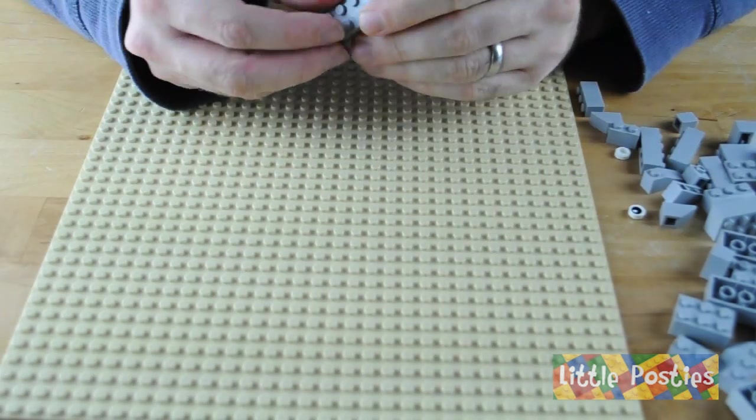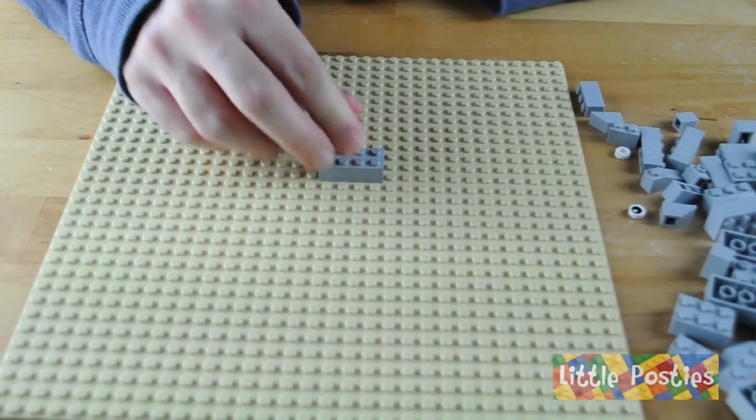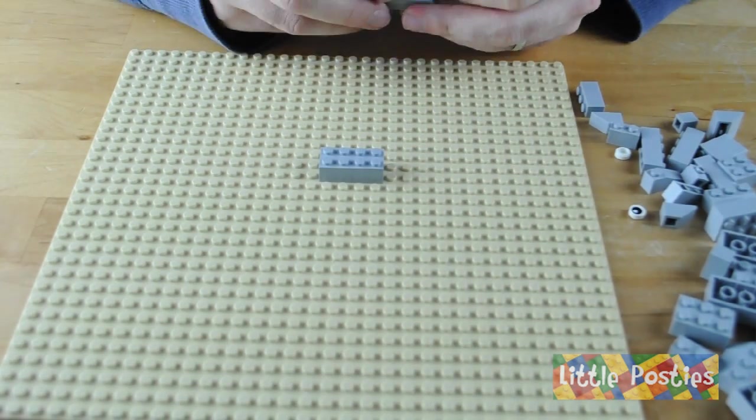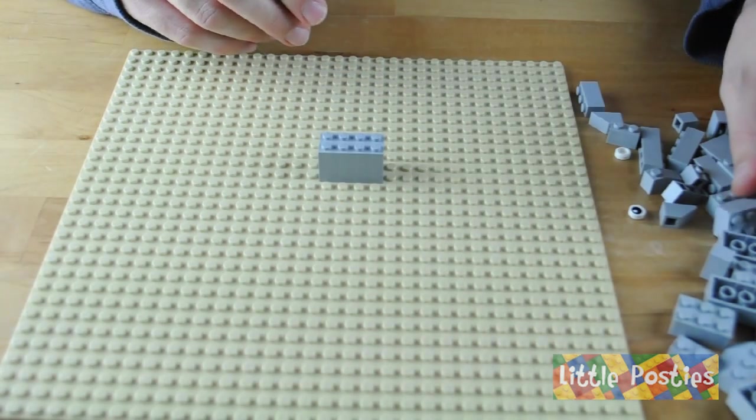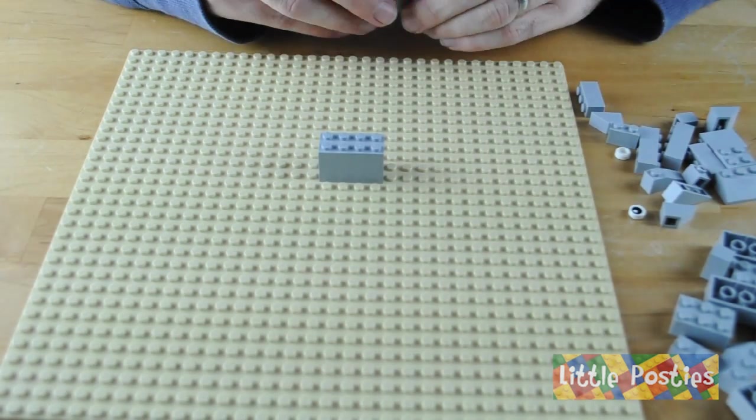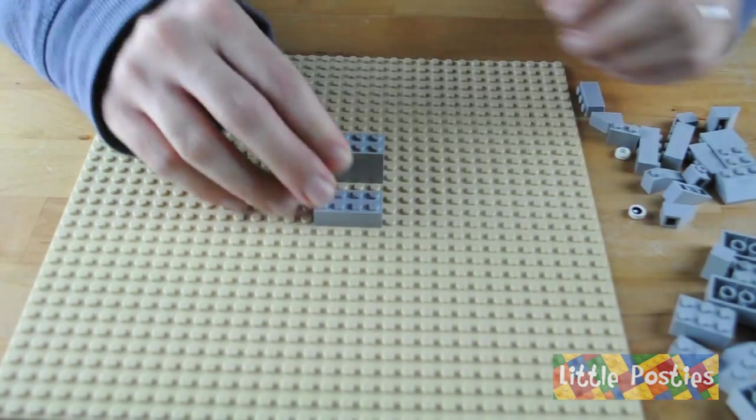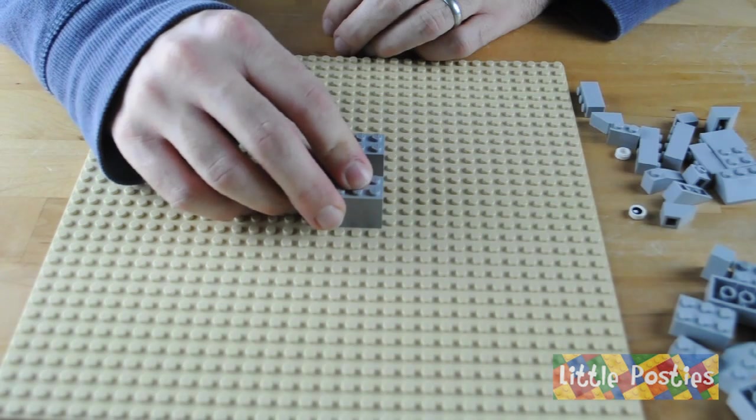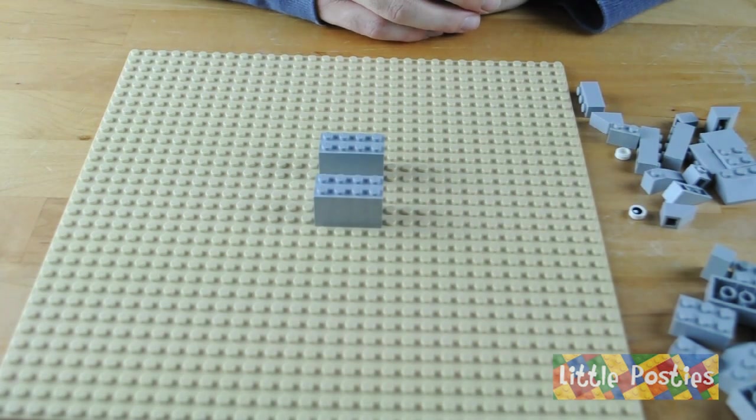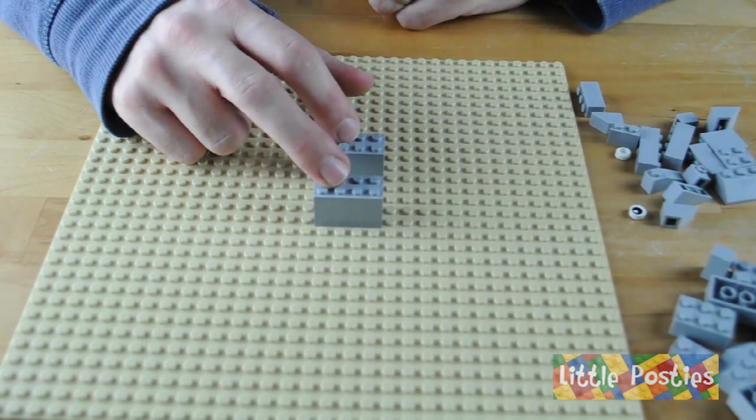So first of all we start off with a 2x4 brick and another one. Stack that straight on. Do the same at the front and the same again. Now we've got four 2x4 bricks and these are the elephant's legs.